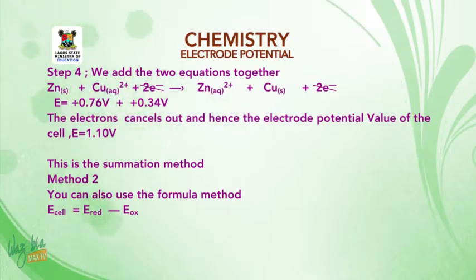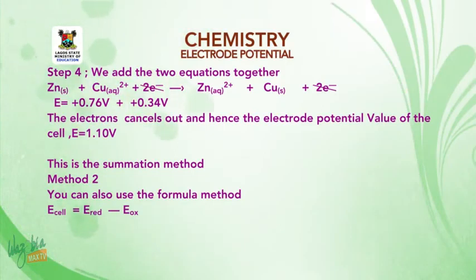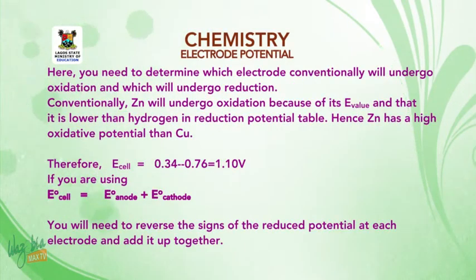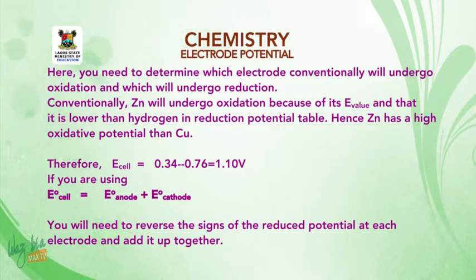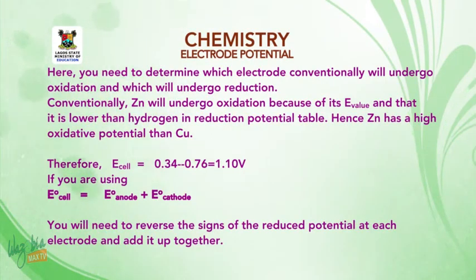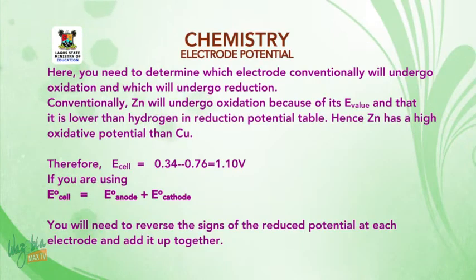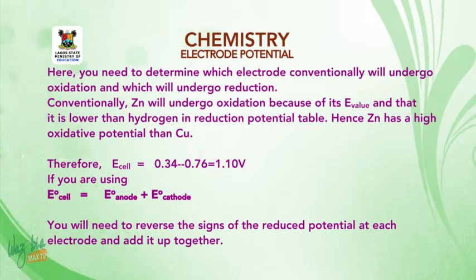Method 2: using the formula E cell = E reduced − E oxidized. Determine which electrode undergoes oxidation and which undergoes reduction. Zinc undergoes oxidation because its E value is lower than hydrogen in the reduction potential table; hence zinc has a higher oxidative potential than copper. Therefore, E cell = 0.34 − (−0.76) = 1.10 volts. If using E cell = E anode + E cathode, you need to reverse the sign of the reduced potential at the anode and add it to the cathode potential.